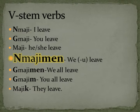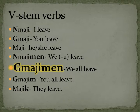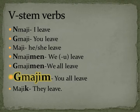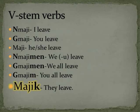In some ways it's a little more polite. Namajimen — we but not you leave. Gamajimen — we all leave. Gamajim — you all leave. Majik — they leave. Pay attention to the front part of the word: the N on the front is I, the G on the front is you, nothing on the verb or a W or a wek at the end is he or she, the N in the men is we-but-not-you, the G in the men is we all, the G in the m is you all, and the K is they.